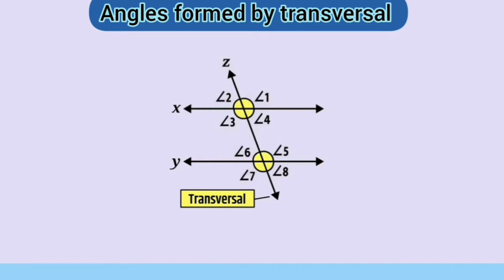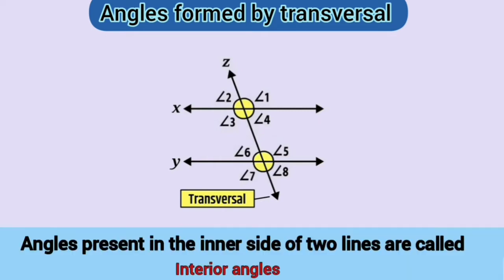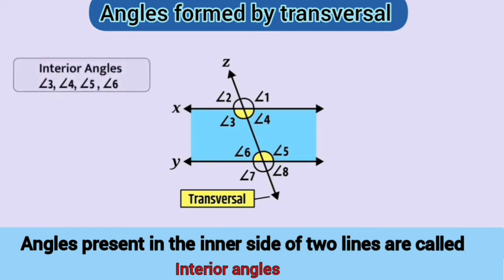Angles present in the inner side of two lines are called interior angles. Here, angle 3, angle 4, angle 5, and angle 6 are interior angles.